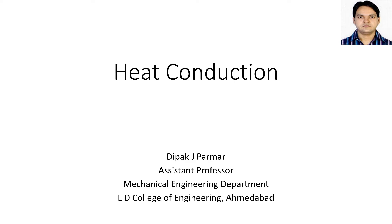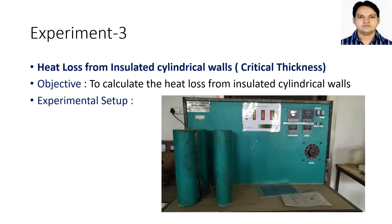Good morning friends. Today we will discuss our next experiment: heat loss from insulated cylinder walls. We have already discussed critical thickness of insulation in our lecture, so this experiment is related to that. In our setup, three cylinders are visible having different radii — one with minimum diameter, one intermediate, and one with maximum diameter. Our objective is to calculate the heat loss from insulated cylinder walls for three different outer radii.